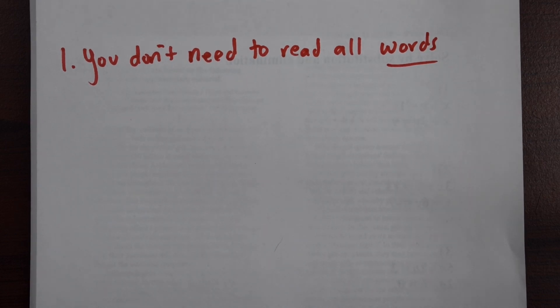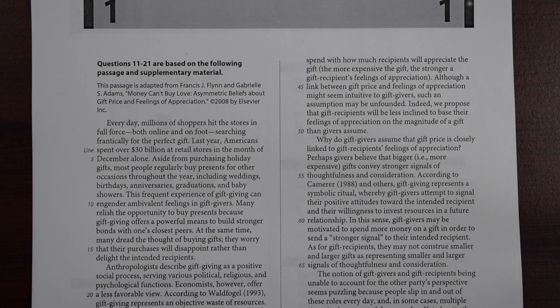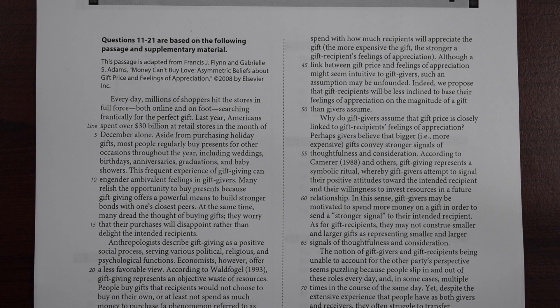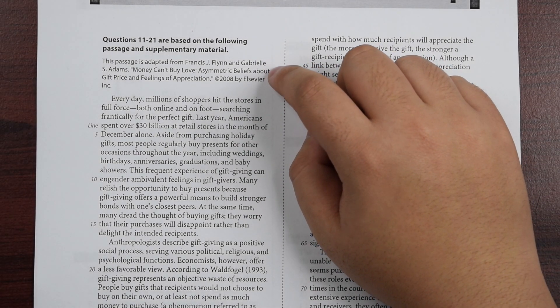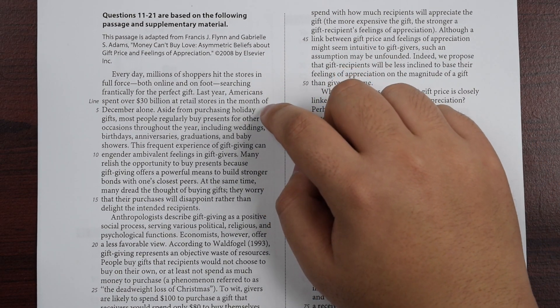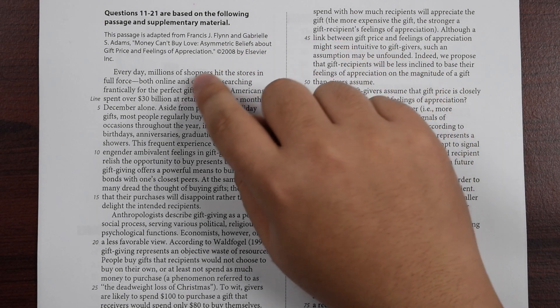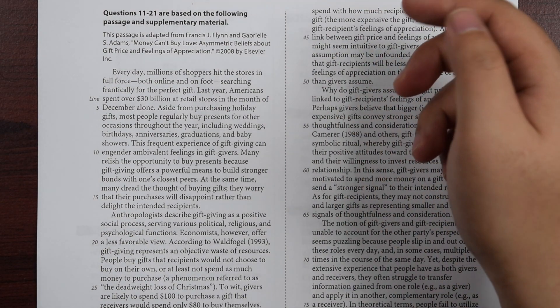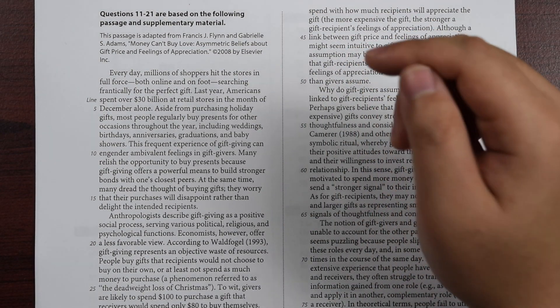What do I mean by that? When I say you don't need to read all words, it's very important to recognize that not every single word will give you the information that you need in order to do well on the curriculum reading passage. If I flip back into this portion, I want you to be aware that there's a lot of extra descriptors that are going to exist. The first portion right here, which is actually called the blurb, is useful information, so don't skip this part. But there are going to be parts when you're reading through this that are sort of useless. When I'm reading this, they tell me everyday millions of shoppers hit the store full force, online and on foot, researching frantically for perfect gifts. Last year, Americans spent over $30 million in December alone.